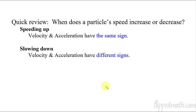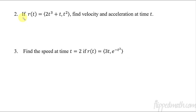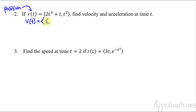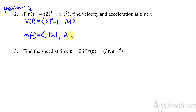For number 2, I should clarify that the given function is the position function, r of t. We're just finding the velocity vector and the acceleration at time t. Taking the first derivative, the velocity vector is 6t² + 1 for the x component and 2t for the y component. Then the acceleration vector is the derivative of that: 12t comma 2.